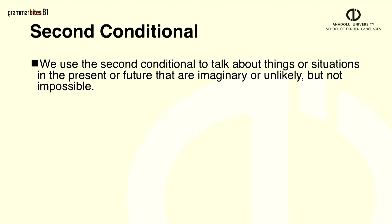As we just saw, we use the second conditional to talk about imaginary things or situations in the present or future that are unlikely, although not necessarily completely impossible.